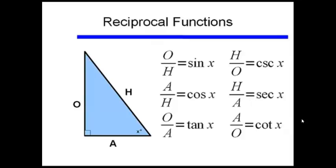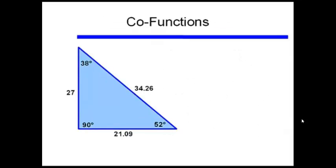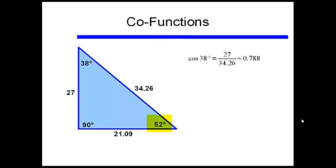Now instead of reciprocal functions, we're going to talk about something called co-functions. Consider a 90 degree, 38 degree, 52 degree right triangle with lengths given. If I look at cosine of 38 degrees, cosine equals the adjacent side divided by the hypotenuse, which is 27 divided by 34.26, approximately equal to 0.788. Now looking at sine of 52 degrees, that equals the opposite divided by the hypotenuse, which is also 27 divided by 34.26 — the same number.